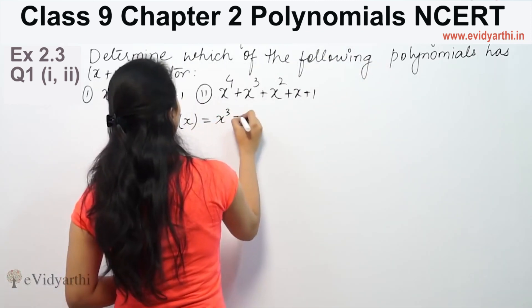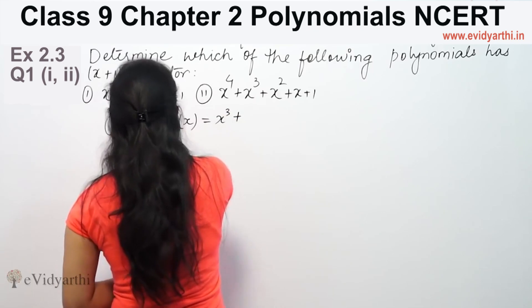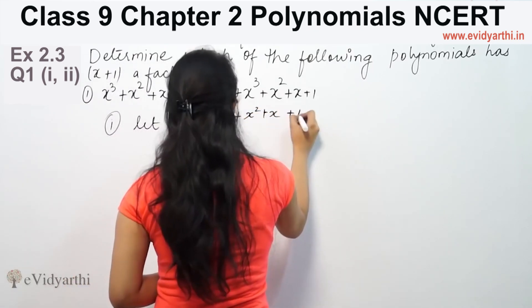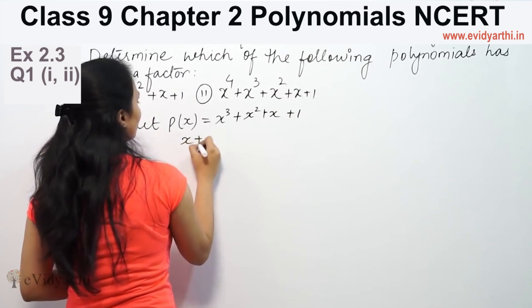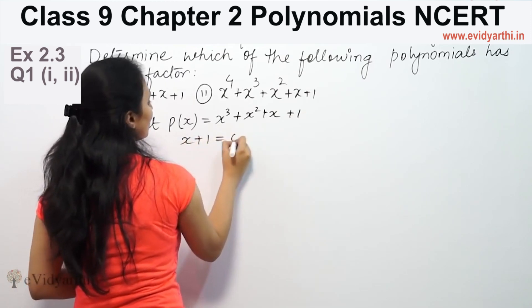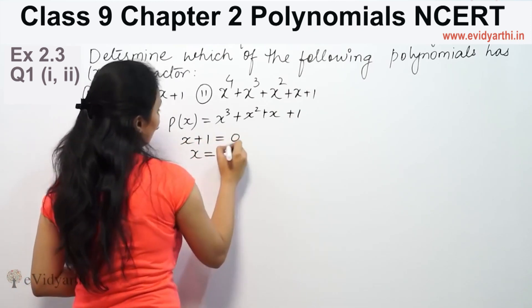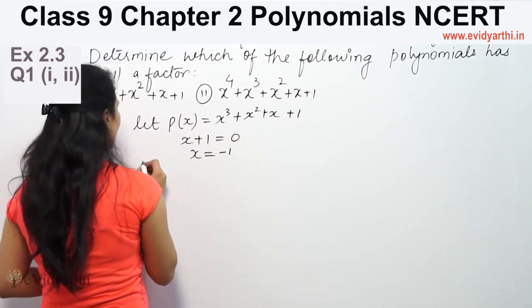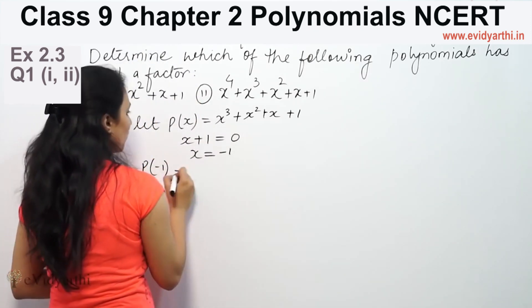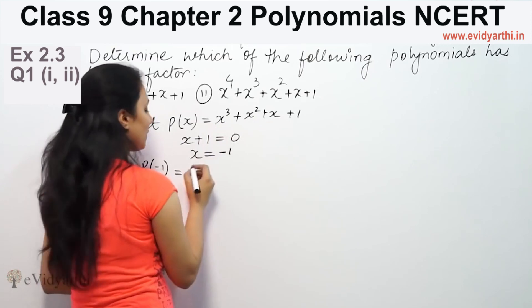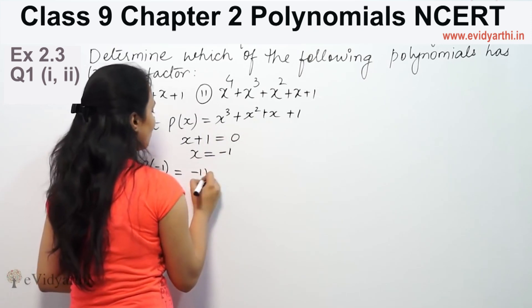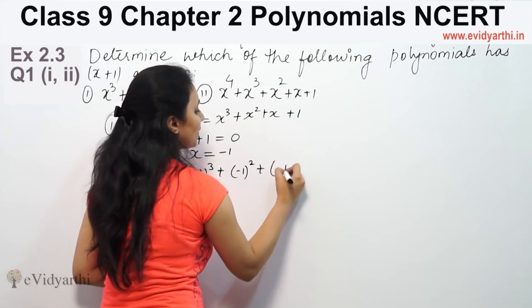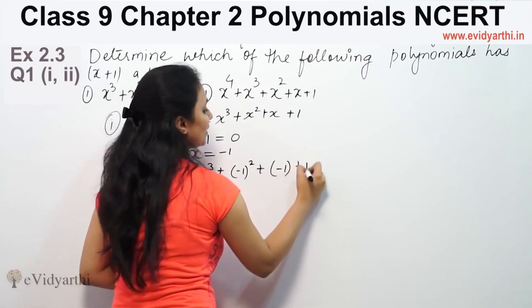So, let P(x) equal x cubed plus x squared plus x plus 1. Since we are testing x plus 1 as a factor, we set x plus 1 equal to 0, which gives x equal to minus 1. Now we substitute x equals minus 1 into P(x), replacing every x with minus 1.